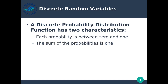A discrete probability distribution function has two characteristics. Each probability is between zero and one, and the sum of all probabilities is one. So for a given probability distribution, all of the probabilities have to add up to one, meaning they are all related to each other within the same distribution.